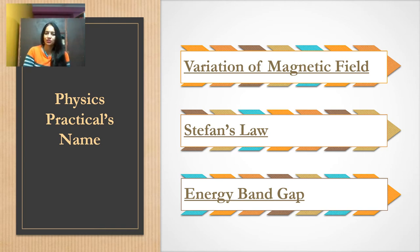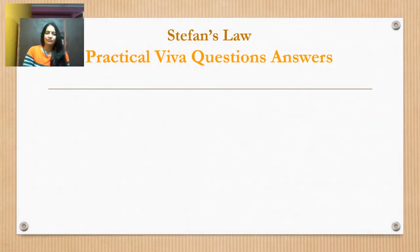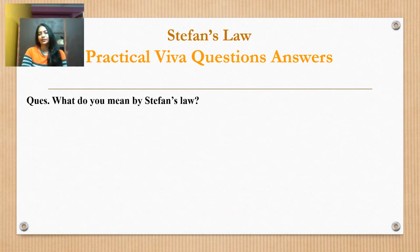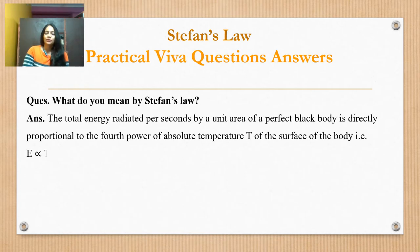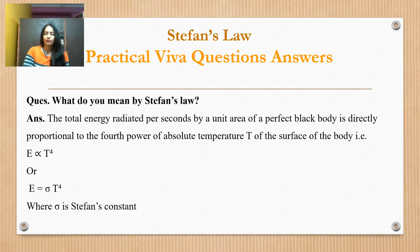Today we are going to do practical Viva Voice questions for Stefan's Law. The first question is: what do you mean by Stefan's Law? If we have to verify Stefan's Law, first of all we need to know what Stefan's Law is. The total energy radiated per second per unit area of a perfect black body is directly proportional to the fourth power of absolute temperature T of the surface of the body. That is, E is proportional to T to the power 4.